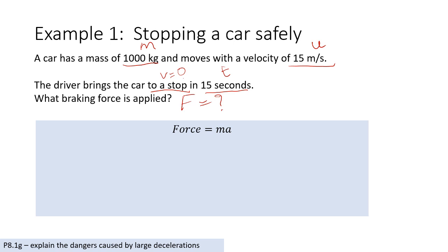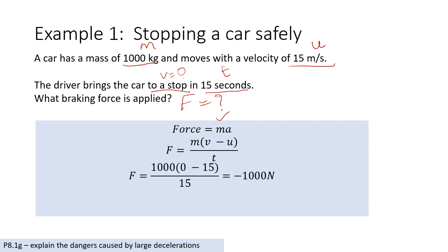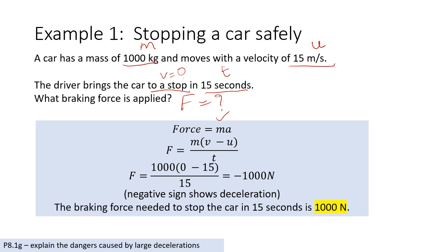We have mass but not acceleration directly. However, we have data to find acceleration. Acceleration is change in velocity divided by time. We know the initial velocity, the final velocity, and the time. Plugging in all the values, the force is minus 1000 newtons. The minus sign tells you the force is acting in the opposite direction — it is decelerating. So the braking force needed to stop the car in 15 seconds is 1000 newtons.